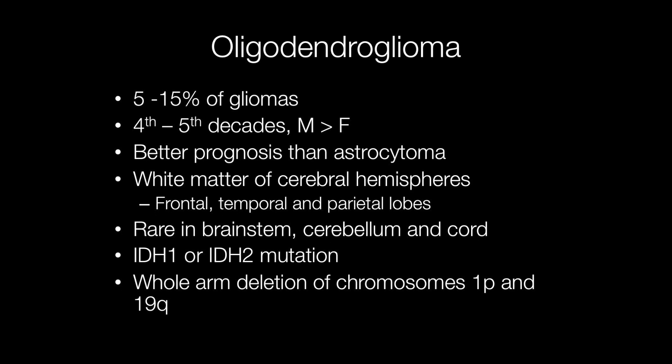Oligodendrogliomas have IDH1 or IDH2 mutation and whole arm deletion of chromosomes 1p and 19q.